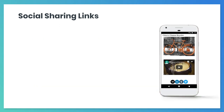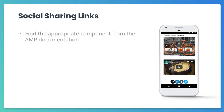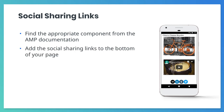So let's do it. First, look at the appropriate component in the Amp documentation — the title of this section is a hint. Once you've found the right component, click the name of the component to access its documentation. You'll add the social sharing links to the bottom of your page, below the Amp YouTube component.